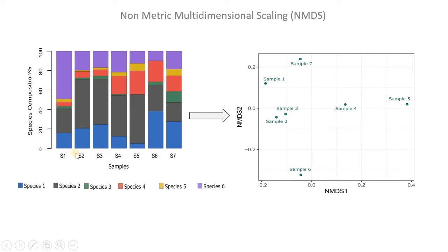One more thing — some species present in one sample might be absent in another. For example, in sample 6 there is no species 5, which is represented by yellow. But in sample 1 you can see almost all species are present.